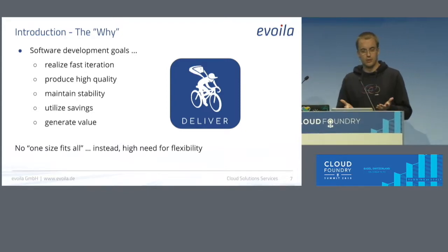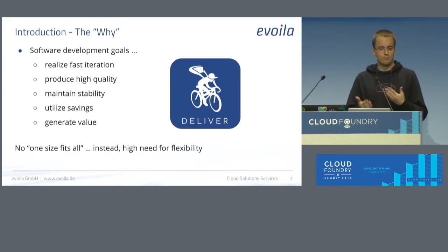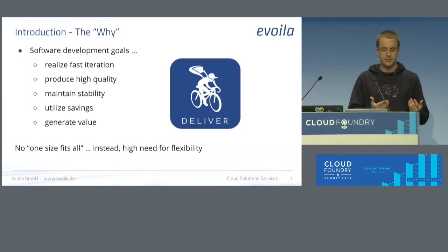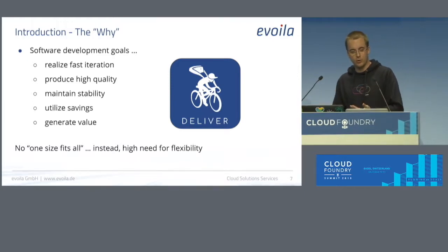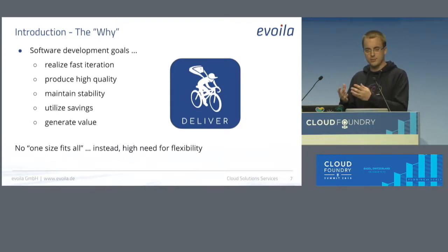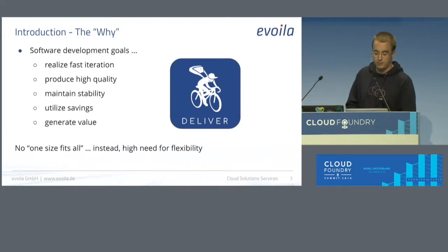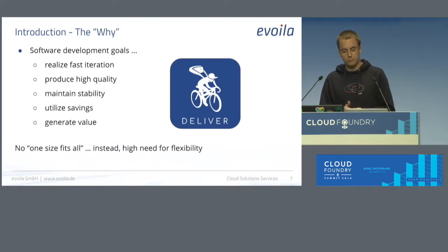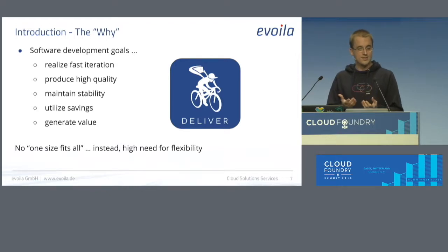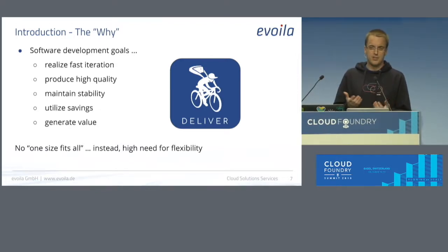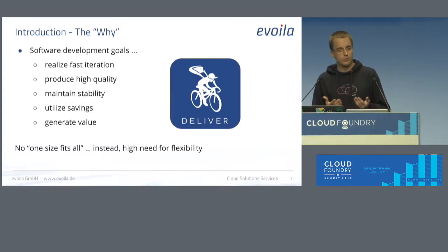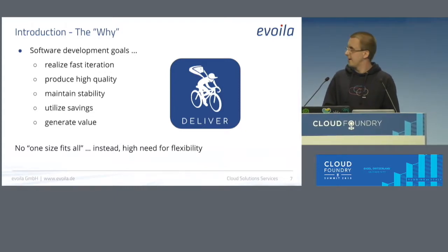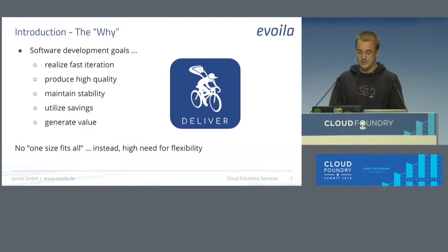Modern software development is subjected to continuous change. Development cycles continue to abridge more and more, while at the same time requirements for features as well as reliability tend to increase. So we have a few opposing goals here, which may not be realized by a one-size-fits-all solution. This often would be the opposite of what companies really want, which is flexibility and agility to cater for the market's needs.